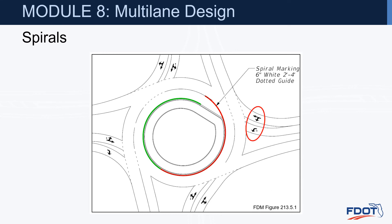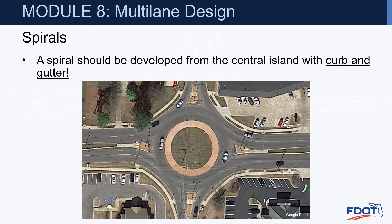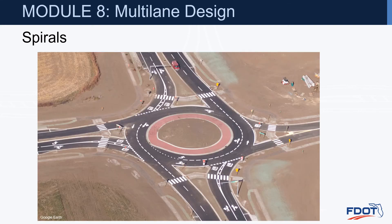Here's a graphic showing a left-turn-only scenario, which requires taking a northbound driver and pushing them into the outer lane so they can reach their exit without being trapped. Spirals are developed with two semicircles of different diameters — shown in green and orange — plus a section of tangent shown in purple. Spirals should be developed from the central island with curb and gutter; if not, vehicles tend to drive over the pavement marking. A photo shows a roundabout ready to open with a spiral incorporated in the design.